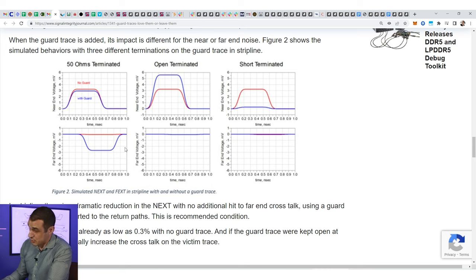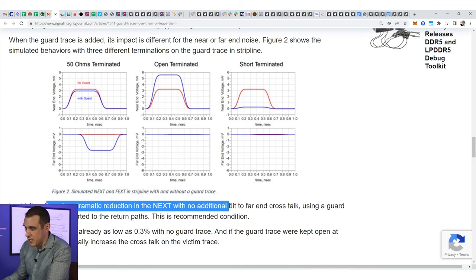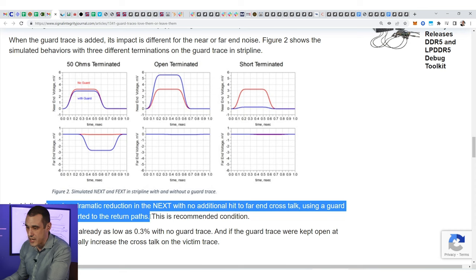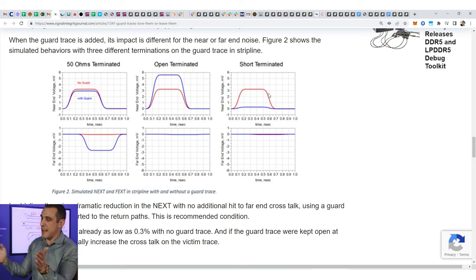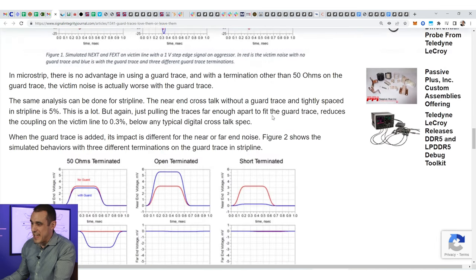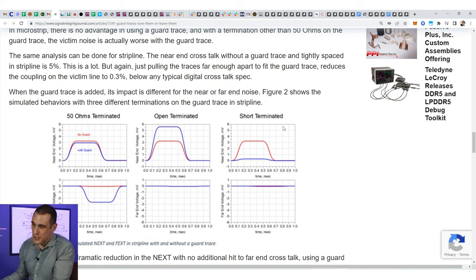You can see very clearly that with the guard trace you get a slight reduction in the near end crosstalk but in the far end crosstalk you get an increase. So in the stripline there's only a dramatic reduction in near end crosstalk and no additional penalty to far end crosstalk as long as the guard trace is shorted at its end to the return paths. So if you were going to use it that's the recommended condition. However, as you can see here in the upper right graph the near end crosstalk is already very low and again you're already going to have to space those lines out far enough apart to where you can even fit a guard trace in between them. I think this illustrates only one situation out of 12 where you get a benefit to crosstalk by using a guard trace.